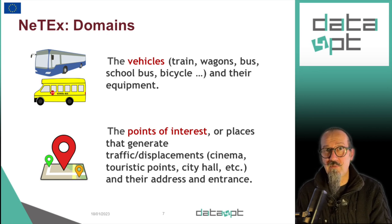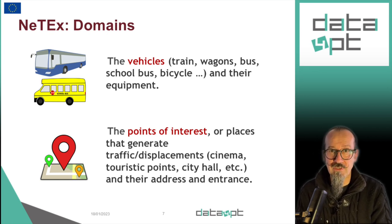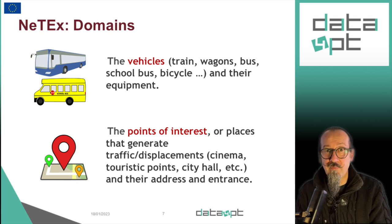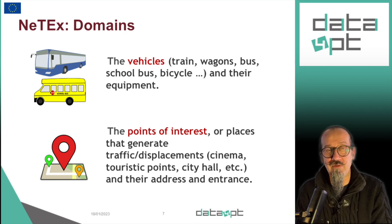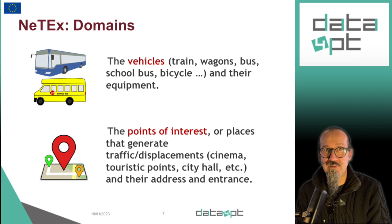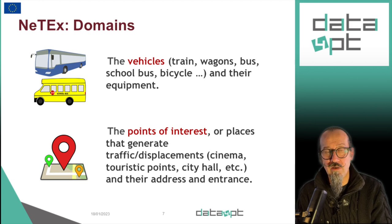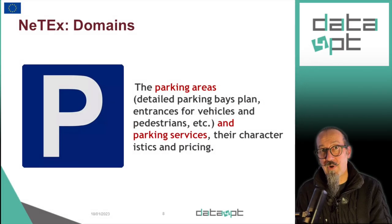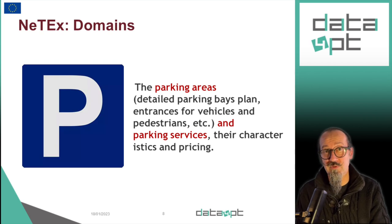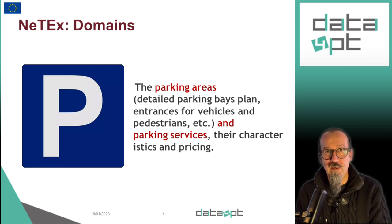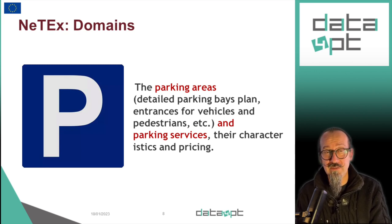NETEX provides a way to fully describe the vehicles — the buses, the trams, the trains and their composition, the cars, but also the bicycles, the scooters, and in fact any kind of vehicle that can be used in the context of a mobility service. The points of interest, which are points that can be the beginning or the end of a journey, like a cinema, a city hall, a business area, are also part of NETEX. Parking is also very important in NETEX since it covers the modal transfers when you go from the car domain to the public transport domain. In the parking, you can describe parking zones, parking bays, the place where you park your car, the entrances for vehicles but also for pedestrians, and everything you need to know about the prices of that parking.